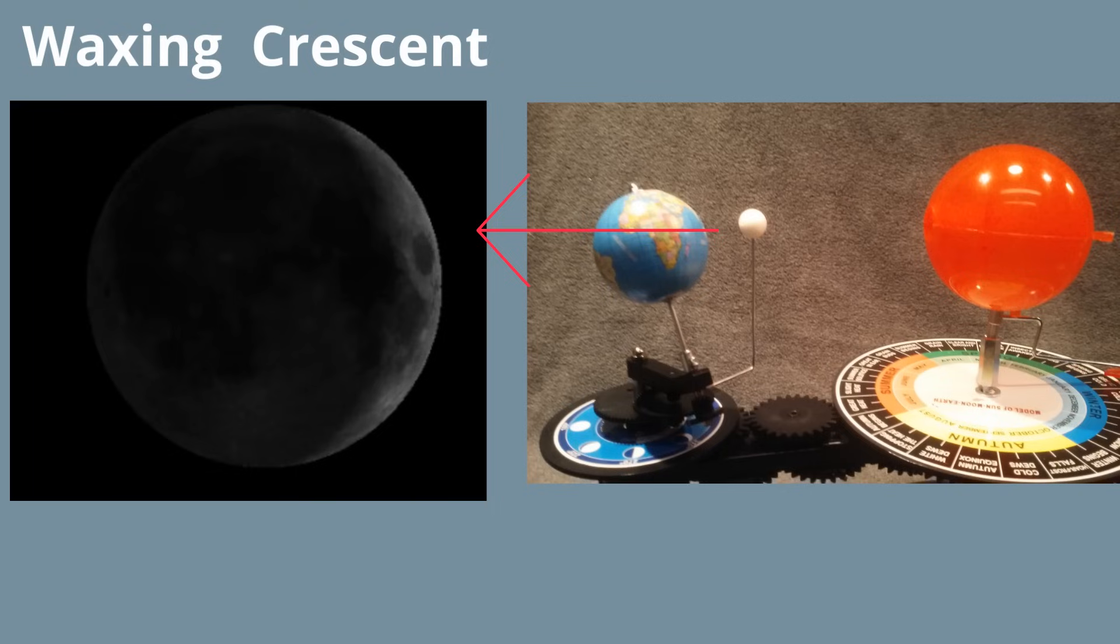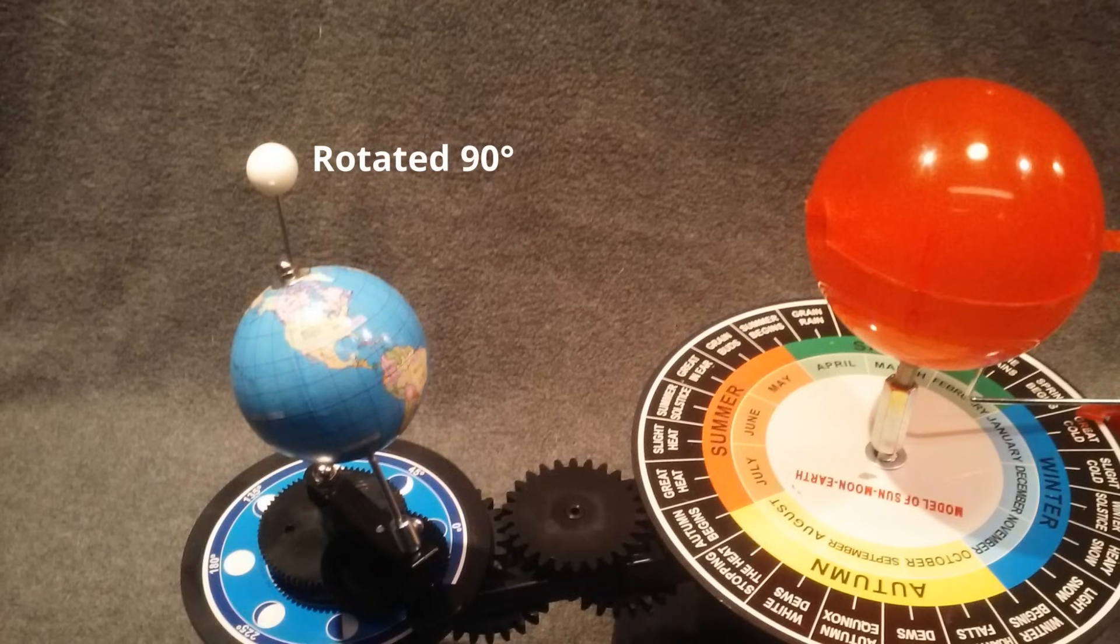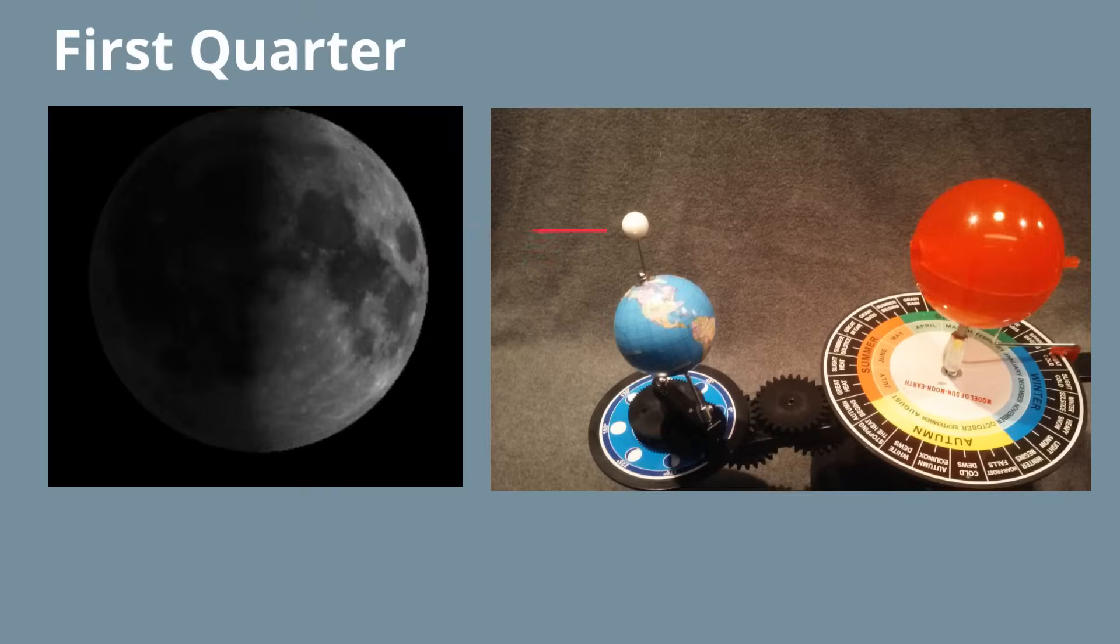In seven days, the moon has now traveled 90 degrees and is at first quarter. Here's the alignment. Remember, the sunlight is always on the right in first quarter. I remember to be first, you must be right and the light is on the right. Also, the shadow moves from right to left.